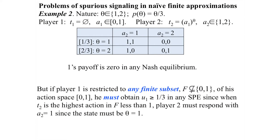Now let's take a naive finite approximation. The only infinite object is player one's action space. Let's discretize it with a finite subset that includes more than just zero and one. The claim is that in any sub-game perfect equilibrium of this finite game, player one's payoff is at least one-third — bounded away from zero — no matter how fine the finite approximation.